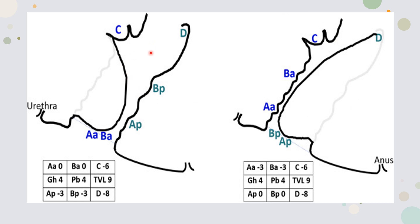Now discussing the first two grids. In Grid 1: Aa is at zero and Ba is also at zero — both at the level of the hymen, having descended from their fixed point of minus 3. C is at minus 6, meaning the cervix is well supported. Genital hiatus is 4 centimeters, perineal body 4 centimeters, and total vaginal length 9 centimeters — all normal. Ap is minus 3 (at its fixed point) and Bp is also minus 3. Pouch of Douglas is minus 8. The only problem is anterior vaginal wall prolapse at zero.